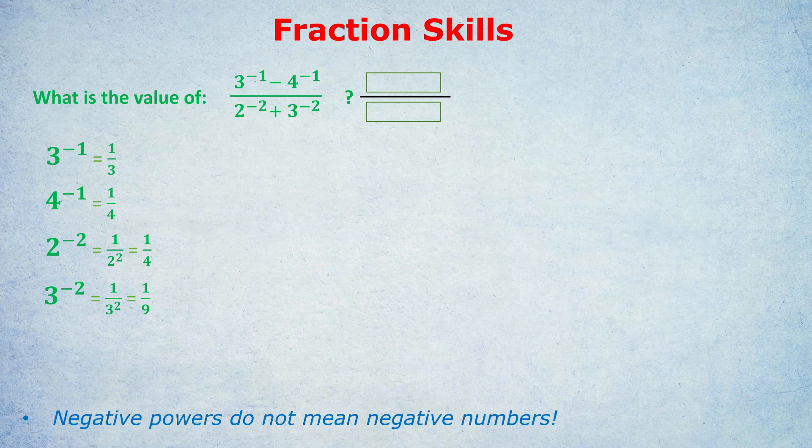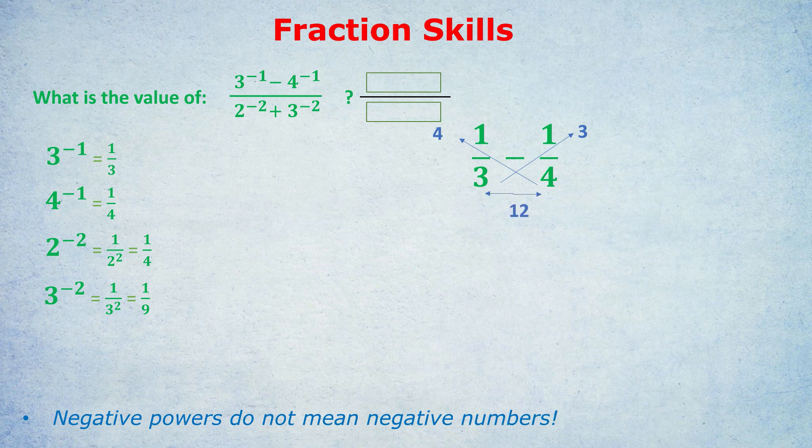I strongly encourage you, if you haven't already, to pause the video and work out this entire fraction and the final answer before you even see me do it. Let's do this. So we have 1 third take away 1 quarter in the top. Going to the left, 4 times 1 is 4. To the right, 3 times 1 is 3. 3 times 4 at the bottom is 12. 4 take away 3 is 1, so it's 1 over 12.